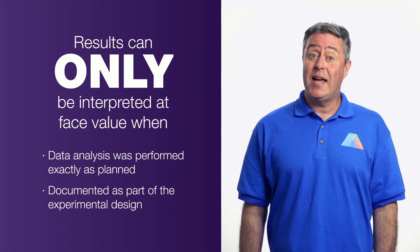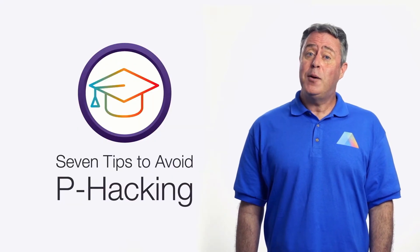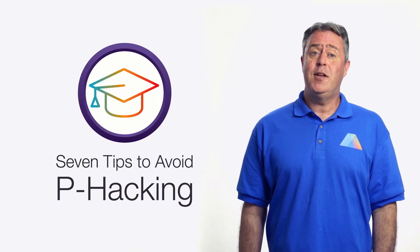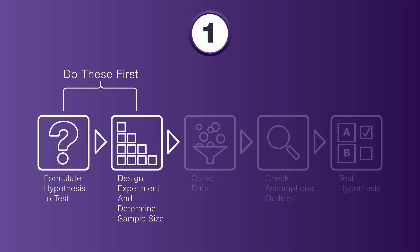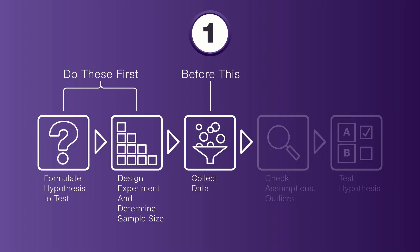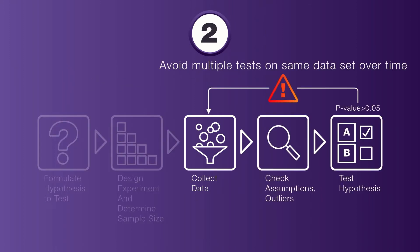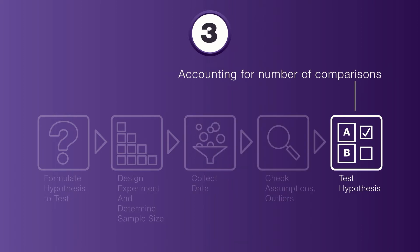So how can p-hacking be avoided? Here are seven important tips. First, hypotheses and sample sizes should be established before data collection, not after. Second, you should avoid testing for significance multiple times on the same data set over time. Tip number three: don't make multiple comparisons on the same data set without taking into account the number of comparisons being made.